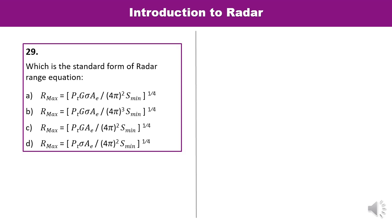Question 29: Which is the standard form of the radar range equation? The radar range equation depends upon transmitted power, gain, capture area, and radar cross-sectional area. Carefully observing all four options, the standard form contains the term PtG and related parameters. That is the correct answer.